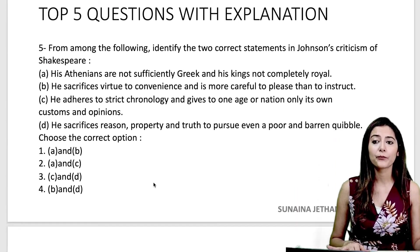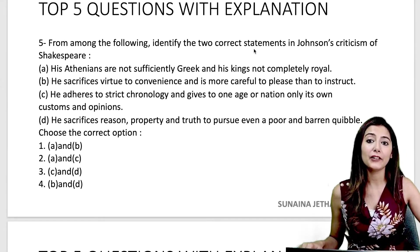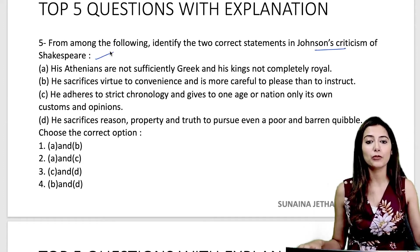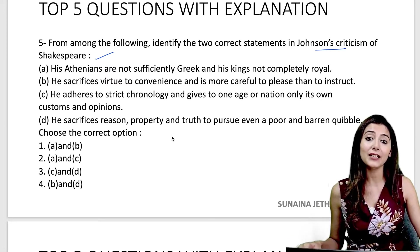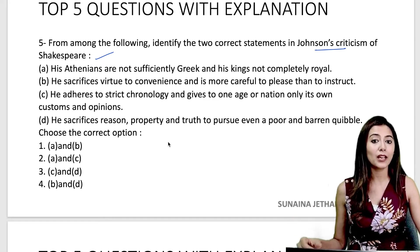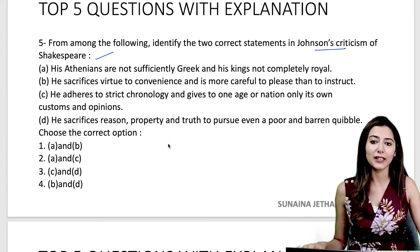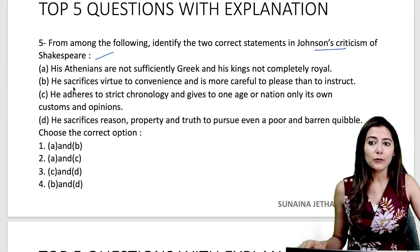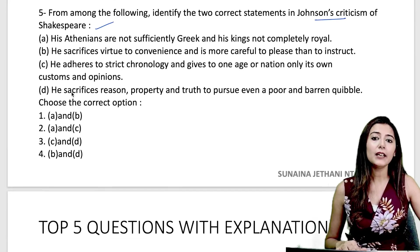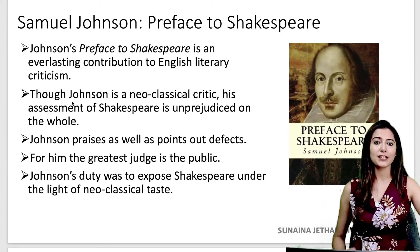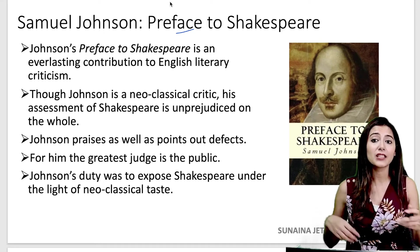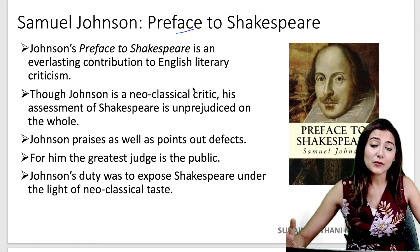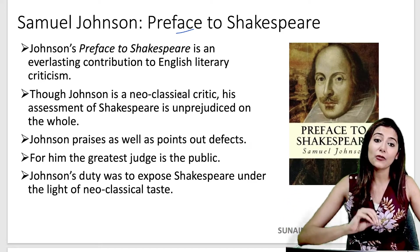Our last question asks: 'Identify the two correct statements in Johnson's criticism of Shakespeare.' This relates to Samuel Johnson's 'Preface to Shakespeare,' in which he explained both Shakespeare's good qualities and the defects of his works. Samuel Johnson was a neoclassical critic, and he praised as well as pointed out defects in this book. For him, the greatest judge is the public, and his duty was to expose Shakespeare under the light of neoclassical taste.